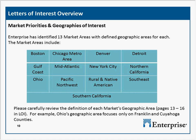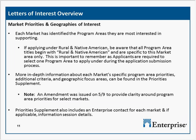Each market has identified the program areas they're most interested in supporting. If you are an applicant interested in applying under Rural and Native American, you should be aware that all of the program area titles for that program area begin with 'Rural and Native American' and are specific to that market area only. Applicants are required to select one program area to apply under during the application submission process.